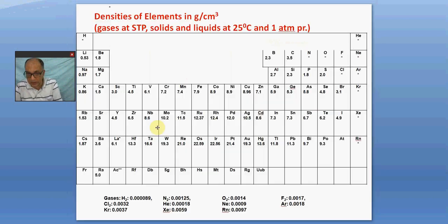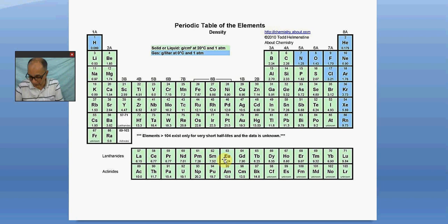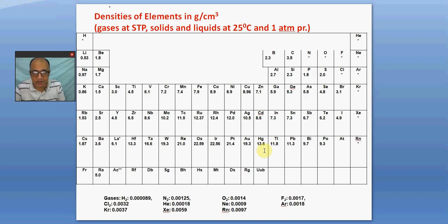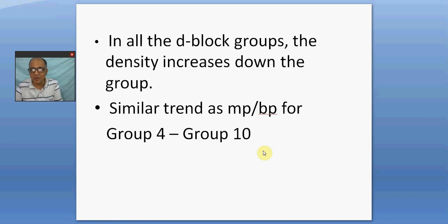Scandium is 3, yttrium 4.5, lanthanum 6.1. Titanium 4.5, 6.5, 13.3. 6.1, 8.6, 16.6. So in all the groups you find there is a consistent increase in each group. But in the middle portion, as in the period, it goes on increasing up to certain elements. So that certain element is iridium and osmium and iridium. So these are the position of the heaviest elements. Mercury, as you know, is though a liquid element, is so heavy, 13.6. So this is about d-block.